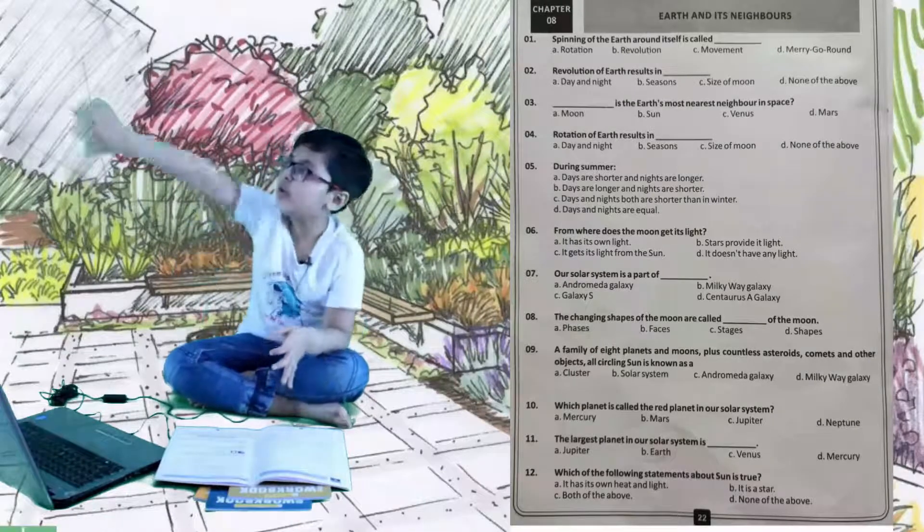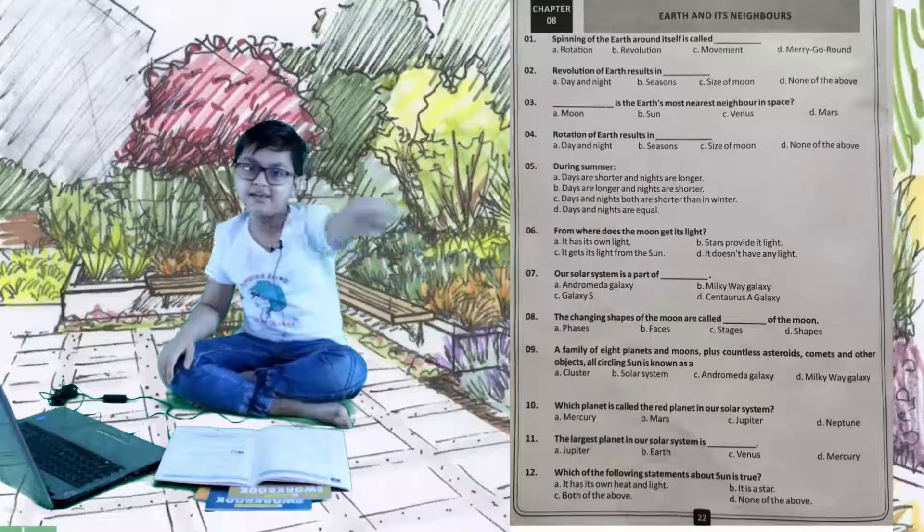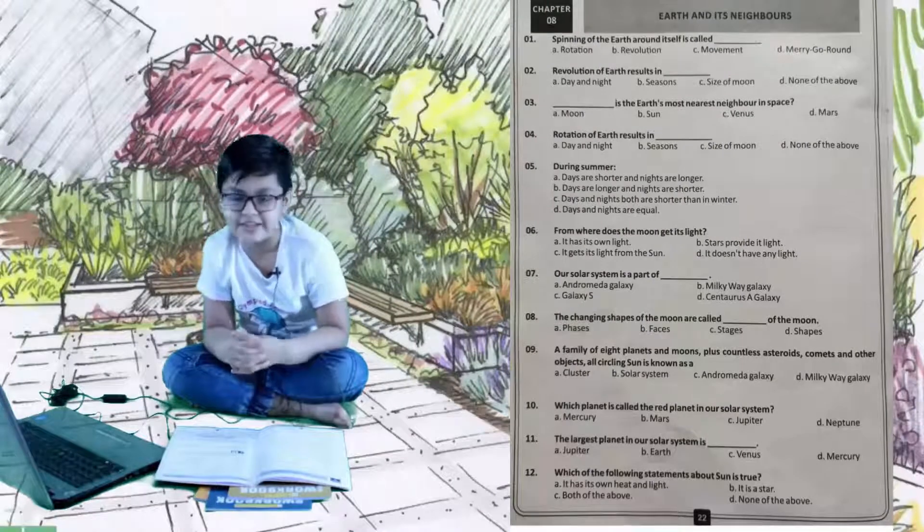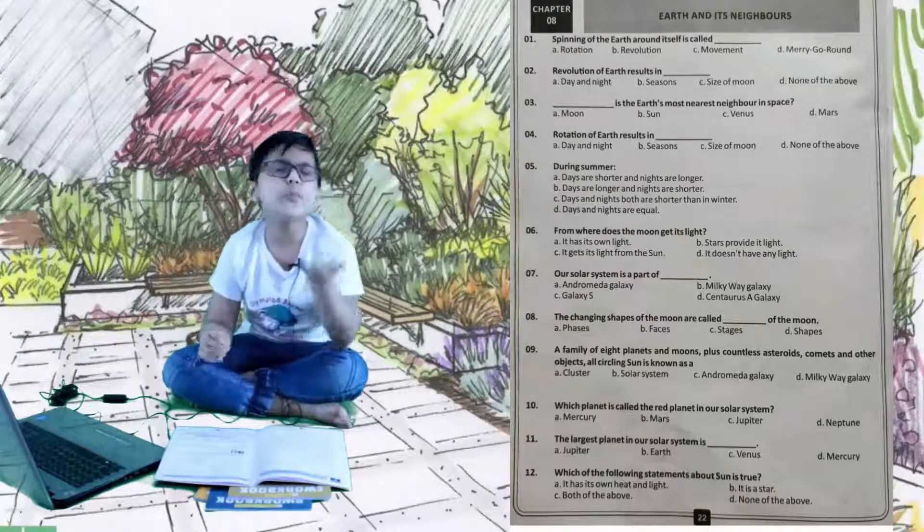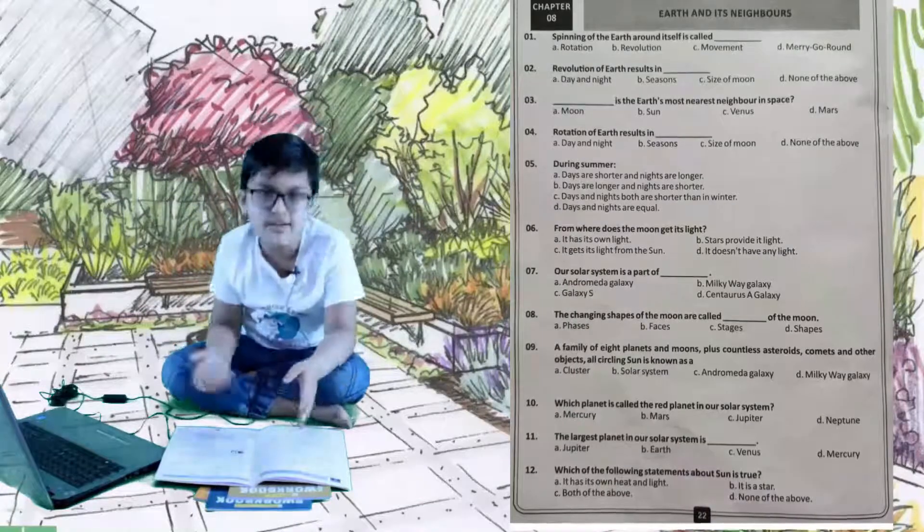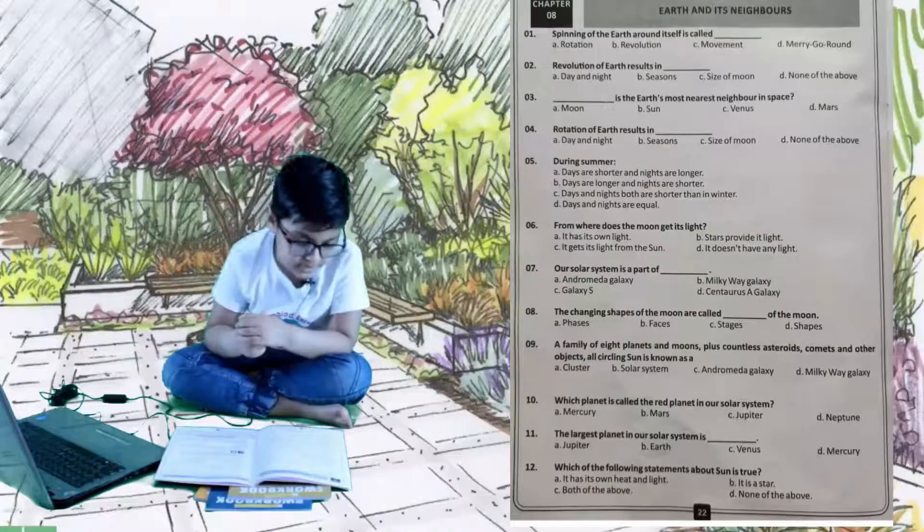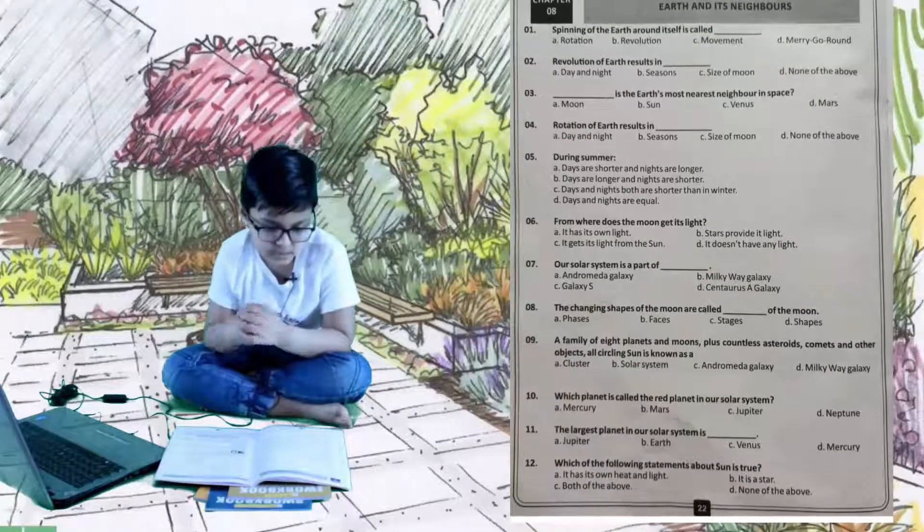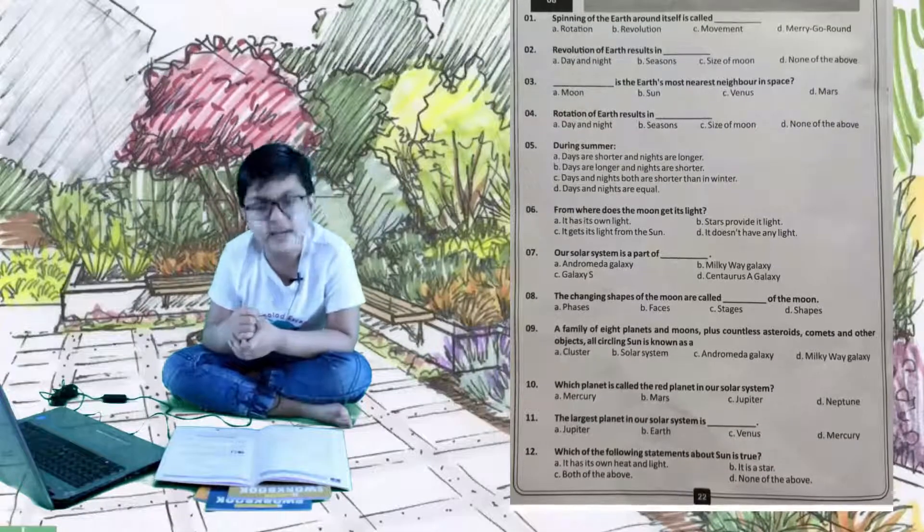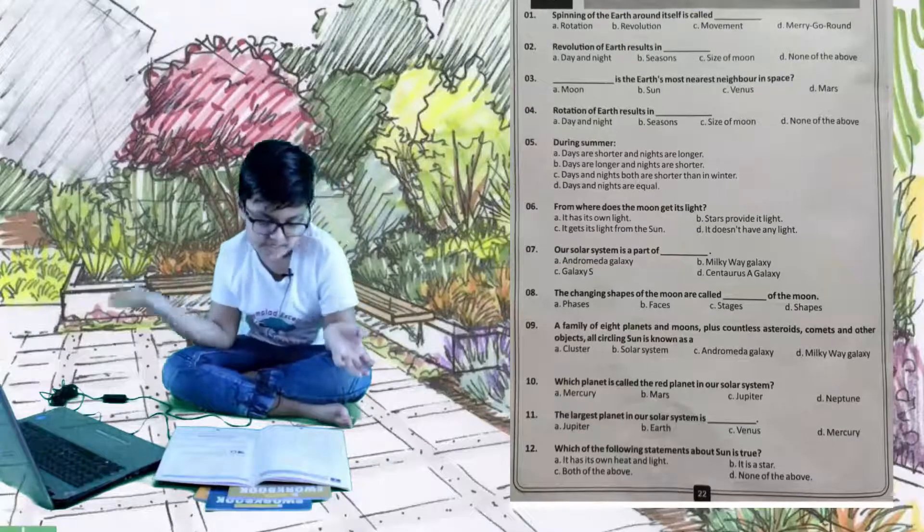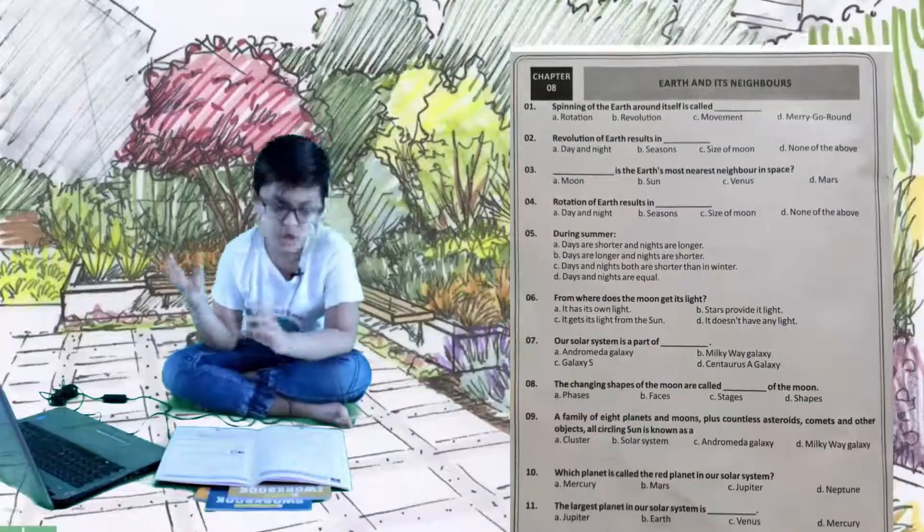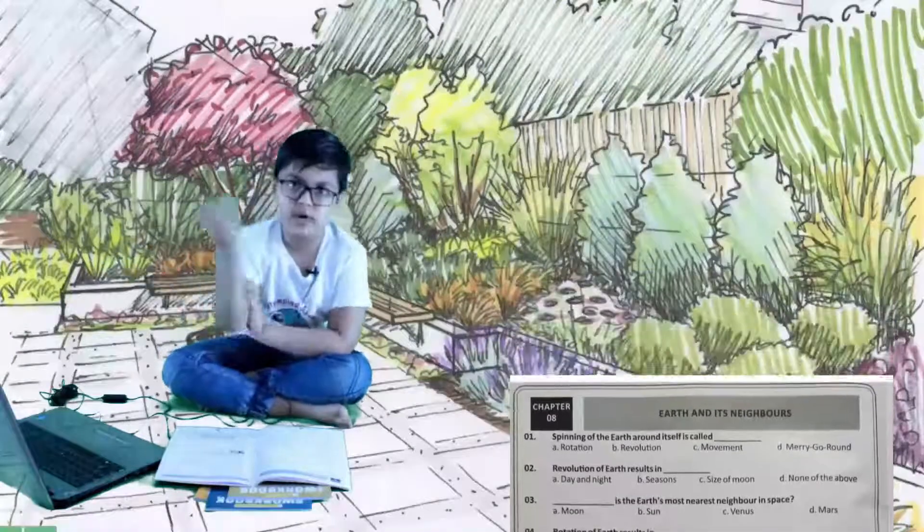Merry-go-round is a thing, not an activity. It's like children sit on it and it goes round. Question two: revolution of earth results in dash. Options: A is day and night, B is seasons, C is size of moons, and D is none of these. The right answer is B, seasons. Day and night are from rotation, not revolution. Revolution is rotating around its star and it changes our seasons.